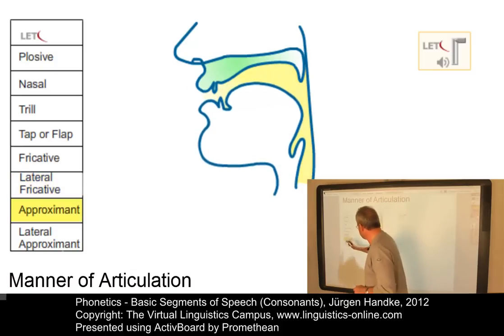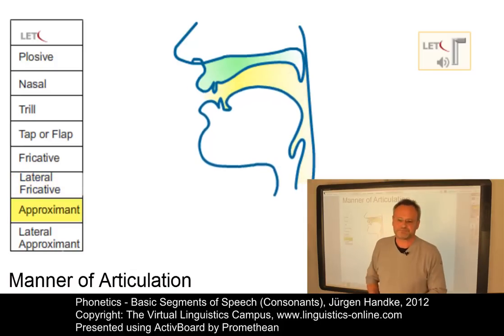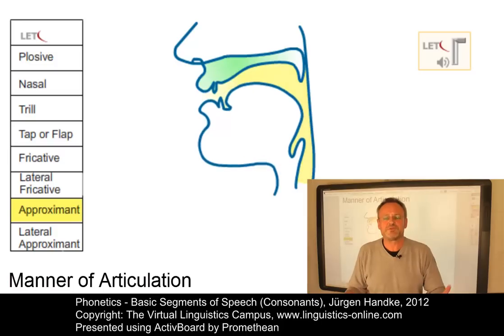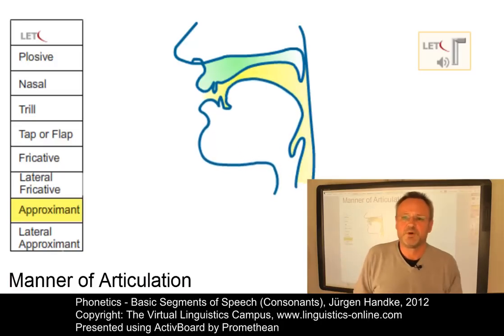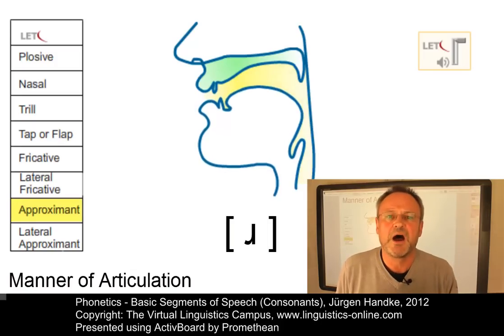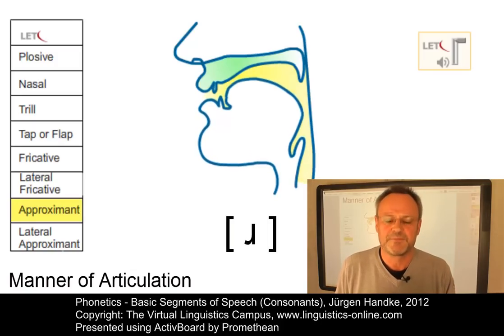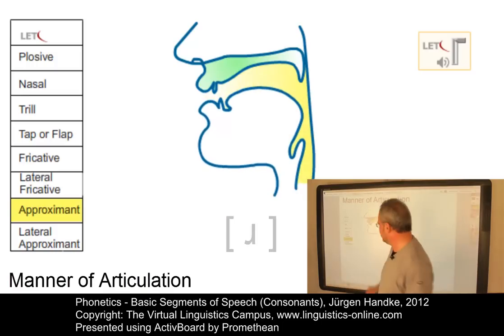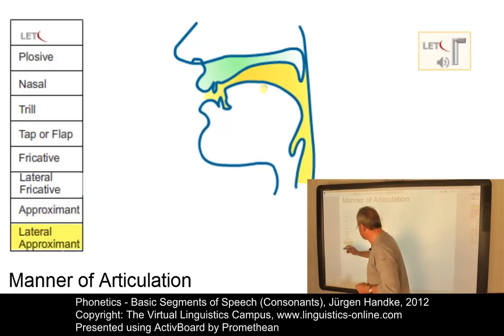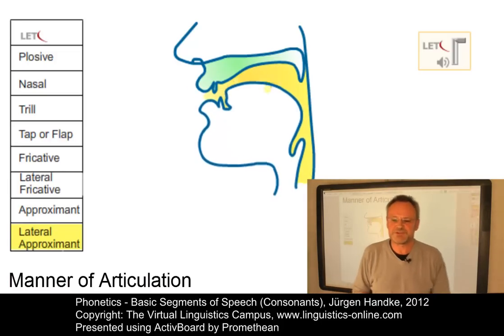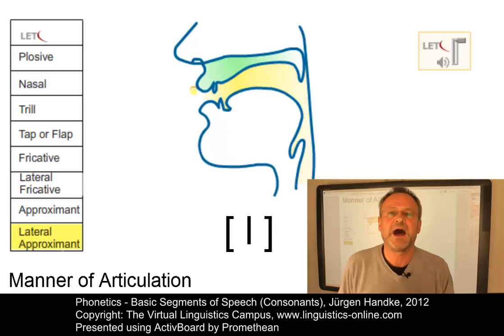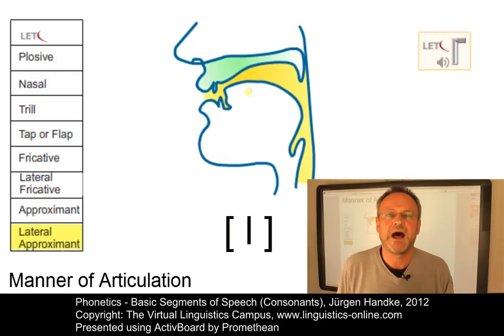Approximants are a little bit problematic — they involve an almost free air passage and are almost like vowels. Some people even call them semi-vowels. An approximant would be something like 'a-ɹa'. Finally, if the airstream in an approximant escapes at the sides laterally, with an almost free air passage, we get a lateral approximant like 'a-la'.